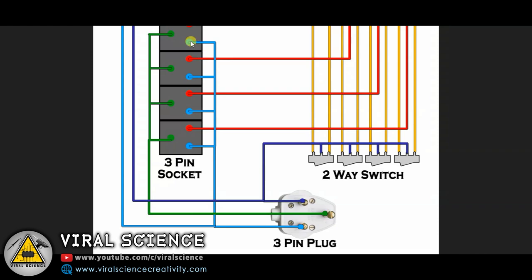Now the neutral pin from the socket directly connects to the neutral pin of the 3-pin plug. So this is connected directly. Now the center pin of the 2-way switch is connected to the live pin of our 3-pin plug. So all the center pins are connected all together and it's connected to the live pin.